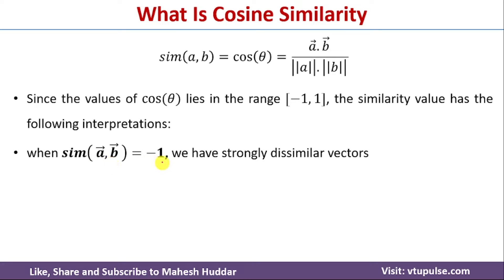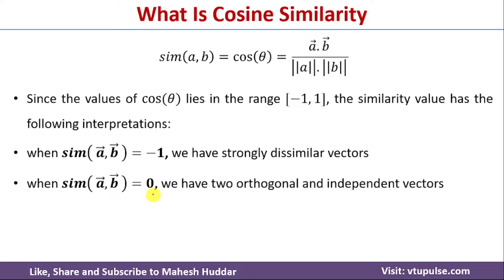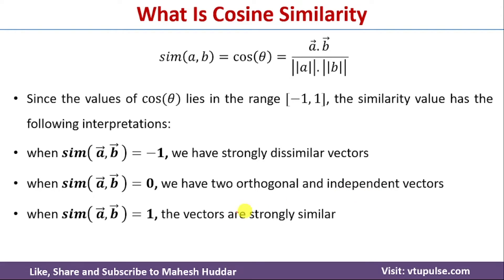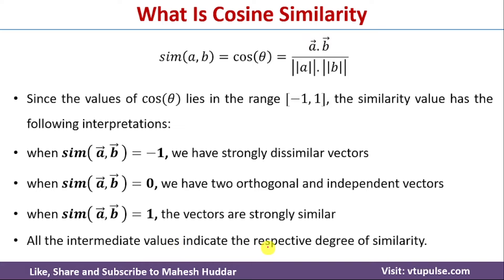When the similarity between A and B is equivalent to minus 1, both the vectors are strongly dissimilar. If the similarity is equivalent to 0, both the vectors are orthogonal and independent with one another. If the similarity is equivalent to 1, both the vectors are strongly similar. All intermediate values indicate the respective degree of similarity. For example, a similarity of 0.5 means they are 50% similar, and minus 0.5 means they are 50% dissimilar.